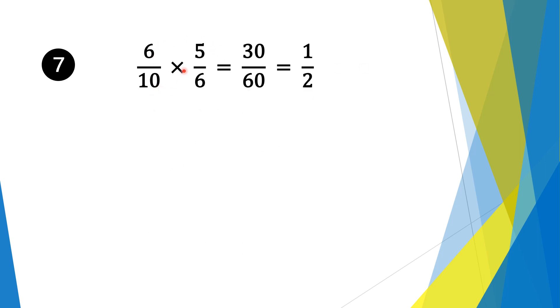Moving on to question 7. We have 6/10 times 5/6. So we multiply the numerators first: 6 times 5 is 30. And then we multiply the denominators: 10 times 6 is 60. Now, whenever we have a 0 in the numerator and denominator, we eliminate the 0 first. And then we get 3 and 6, so they're both divisible by 3. So 3 goes into 3 once, and 3 goes into 6 twice. So our solution is a half.